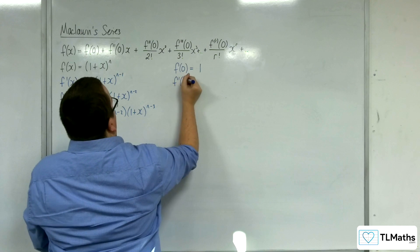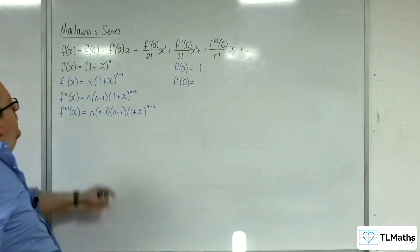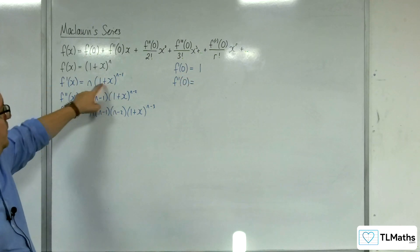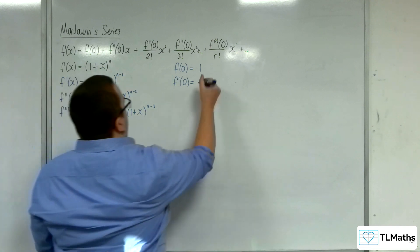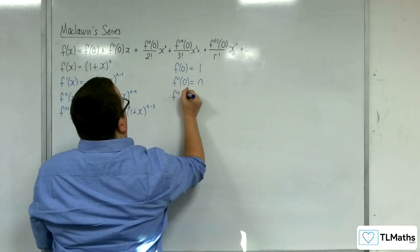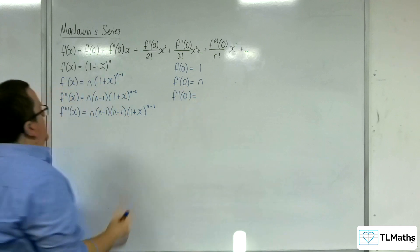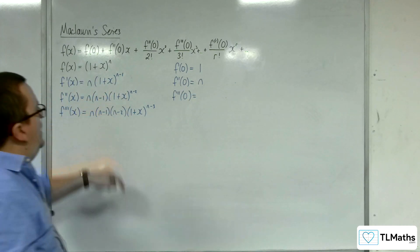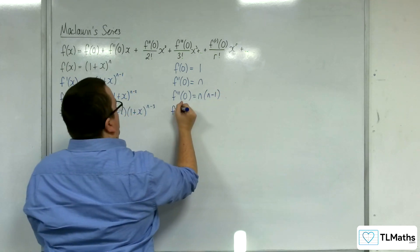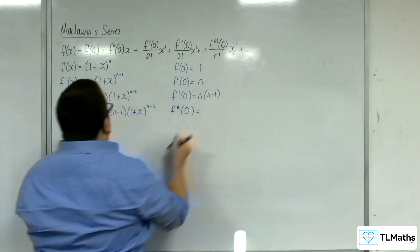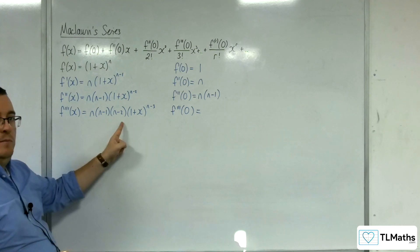Then we've got f prime of 0, so substituting x equals 0 into that, we're going to get n times 1 to the n minus 1, so that's just n. Substituting 0 into the second derivative, we're going to get n times n minus 1. And in the third derivative, we're going to get n times n minus 1 times n minus 2.